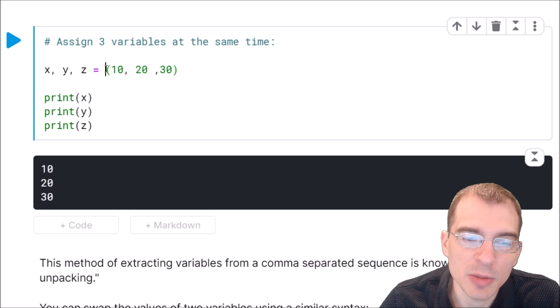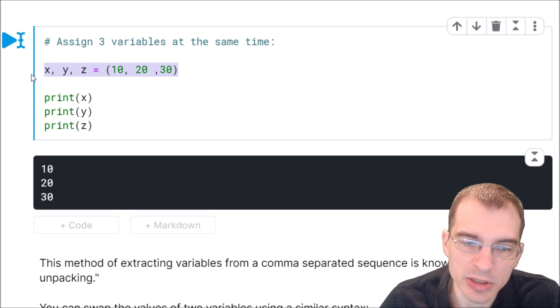This sort of assignment is actually what's known as tuple unpacking. A list of numbers within parentheses in Python is actually known as a tuple. It's a certain type of data structure that we'll go more into later, but this is actually a very common construction to see in Python, having a tuple of values and extracting them into variables like this.